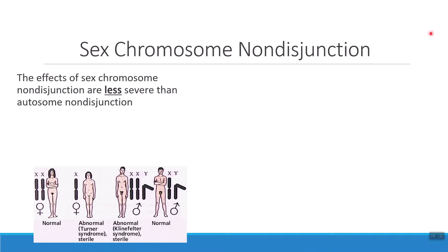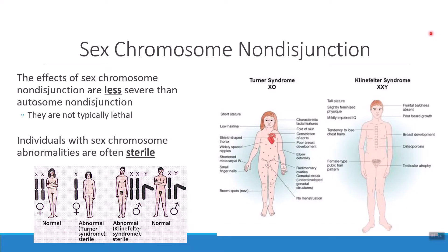When we talk about aneuploidy with the sex chromosomes, we typically see things that are a little bit less severe than with the autosomes. The phenotypes and the disorders that come along with sex chromosome aneuploidy are typically not lethal. What is pretty much true across the board, though, is if your number of sex chromosomes is inaccurate — aneuploidy of the sex chromosomes — this is always going to lead to sterility, meaning you cannot create your own offspring.